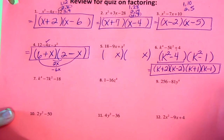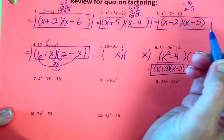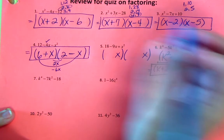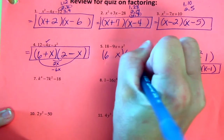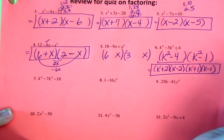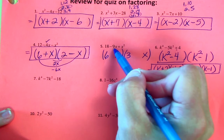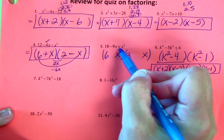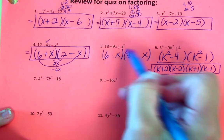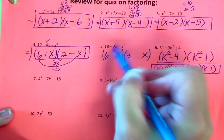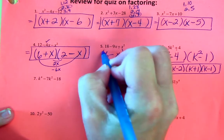Factors of 18 that combine to 9 would be 6 and 3. 6 times 3 is 18 and 6 plus 3 is 9. The signs are the same — it multiplies to a positive — and looking at the middle, they're both negative.